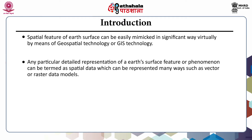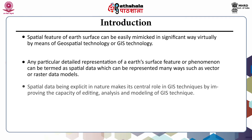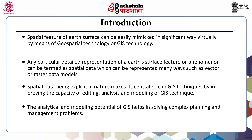We have previously discussed that the vector data model comprises points, lines and polygons, while the raster data model is made up of pixels. The spatial data, being explicit in nature, plays a central role in GIS by improving the capacity of editing, analysis and modeling. The analytical and modeling potential of GIS helps in solving complex planning and management problems.